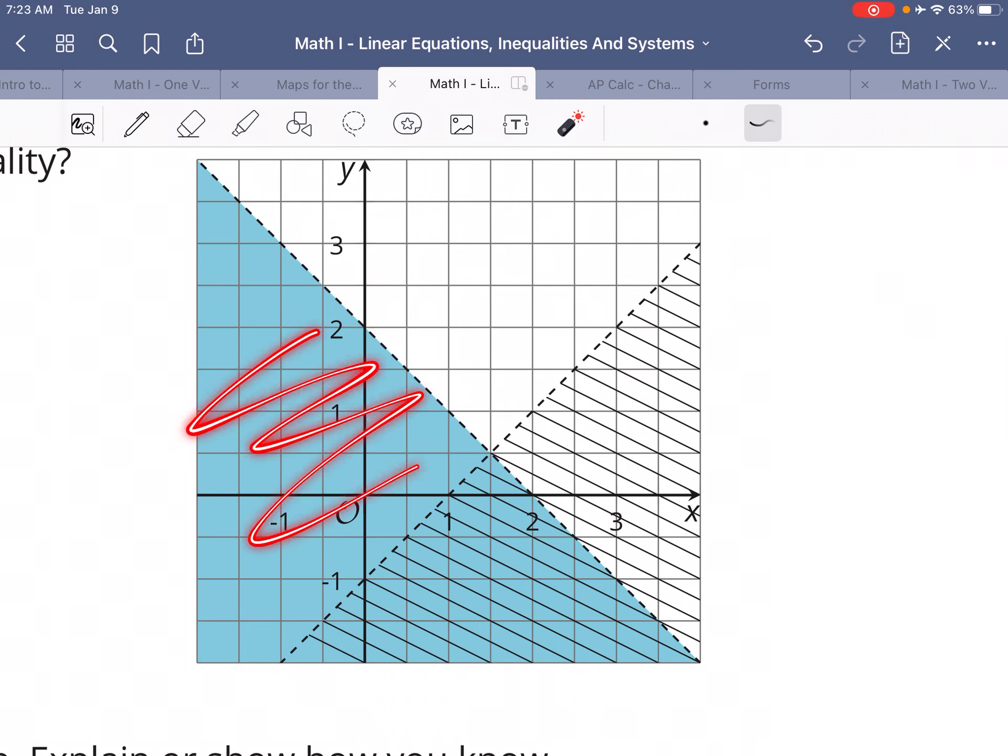And then the shaded regions are the solutions to the inequalities. So if we're looking for an X and a Y value that is a solution to both inequalities at the same time...